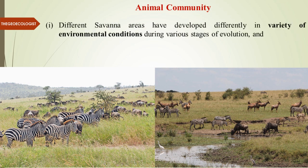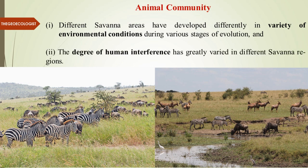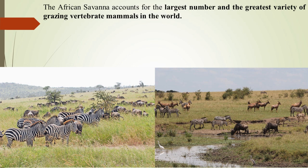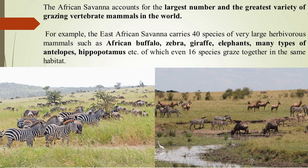Different Savannah areas have developed differently due to variety in environmental conditions and degree of human interference. Animal population diversity has two factors: the environmental factor and the human factor. The African Savannah accounts for the largest number and greatest variety of grazing vertebrate mammals in the world. The East African Savannah carries 40 species of very large herbivore mammals.